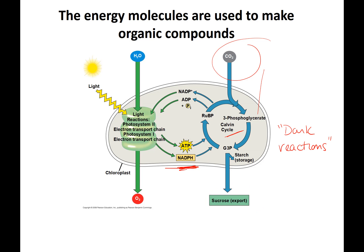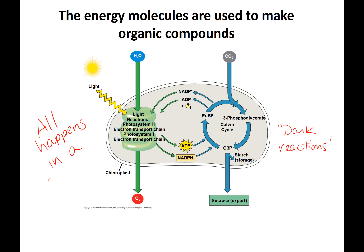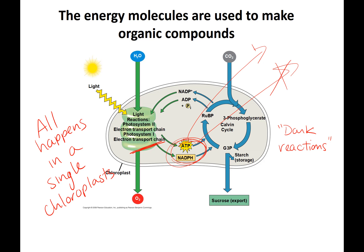An important concept: all of this happens in a single chloroplast. Plants have thousands of chloroplasts, but the light reactions making ATP and NADPH in the stroma of a chloroplast — that material is not going to another cell or somewhere else in the plant. Both reactions of photosynthesis — light reactions and Calvin cycle — must happen in the same chloroplast organelle.